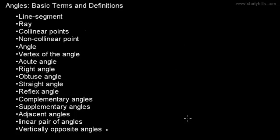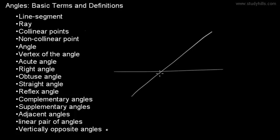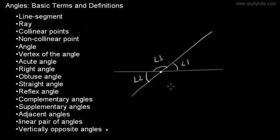Vertically opposite angles are formed when two lines intersect at one point. Angle 1 and angle 2 are one pair of vertically opposite angles. There is another set of vertically opposite angles, which is angle 3 and angle 4.